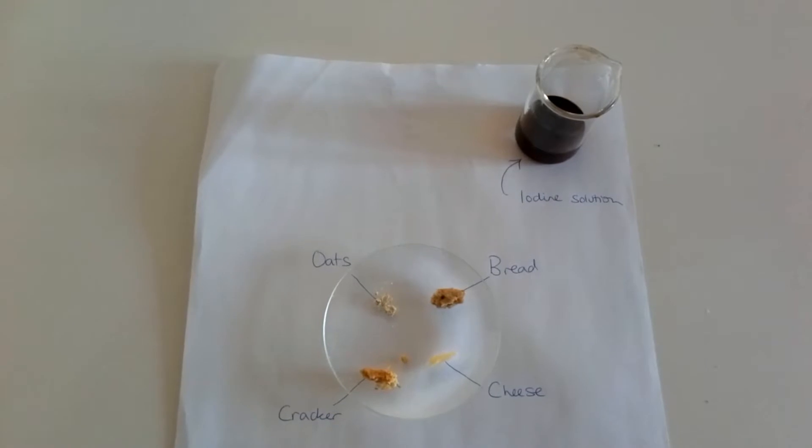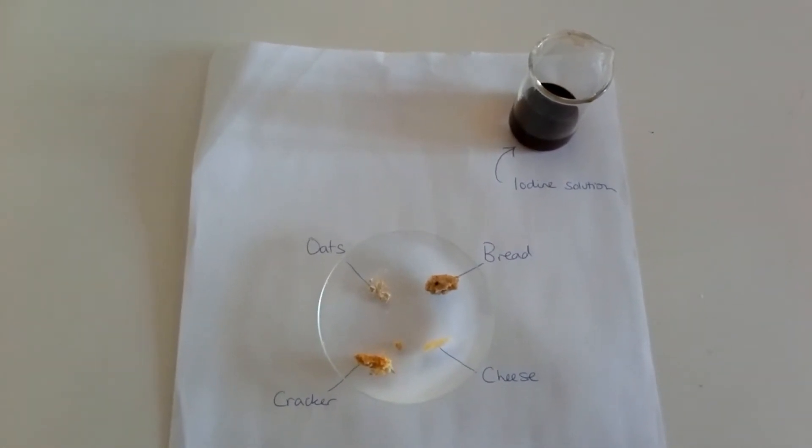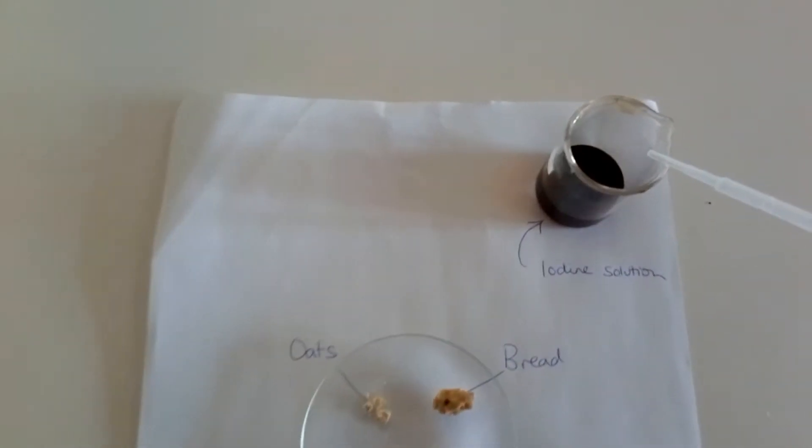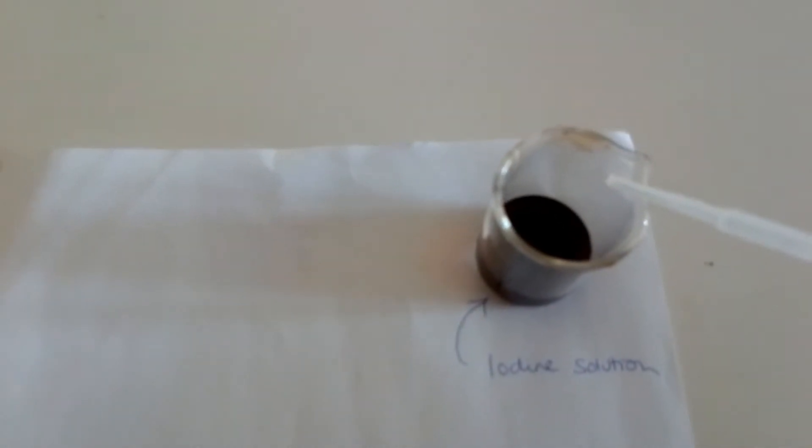So first of all let's remind ourselves about the iodine test for starch. In the beaker here we have some iodine solution which is an orange brown solution.